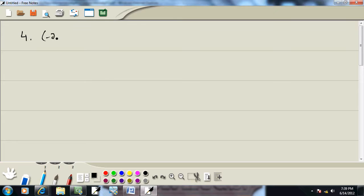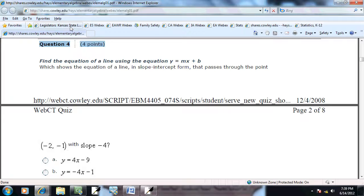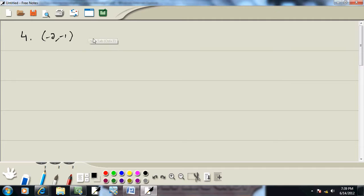So, passes through negative 2, negative 1, slope of negative 4. And this is finding the equation of a line.